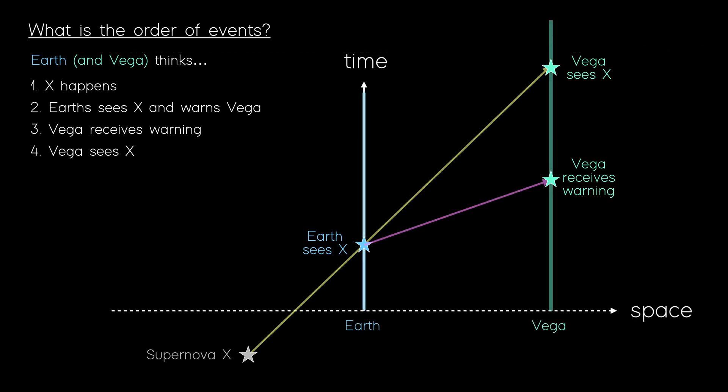Looking at the order, this seems sensible. Cause precedes effect. For example, Supernova X happens and then Earth sees X. Similarly, Earth warns Vega, then Vega receives the warning. Okay, so if you stopped the video here and walked away, please don't, you would erroneously conclude that FTL travel is fine. It doesn't break causality. Cause precedes effects. There's nothing to worry about.